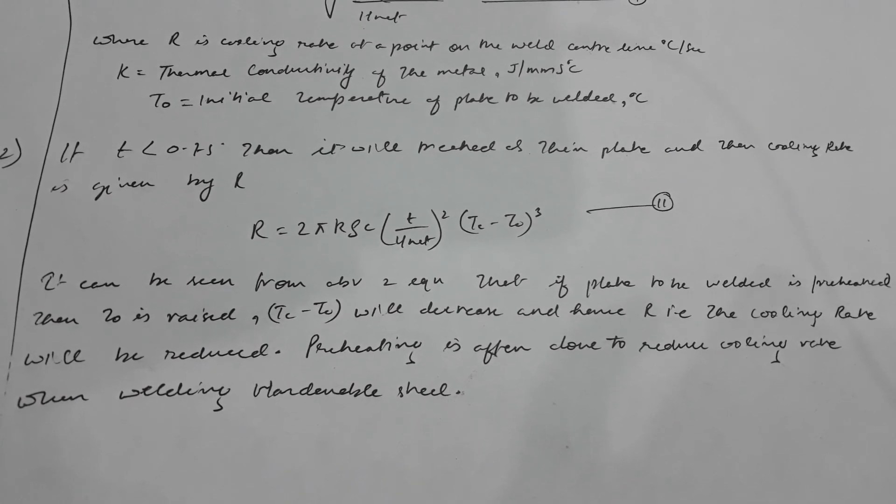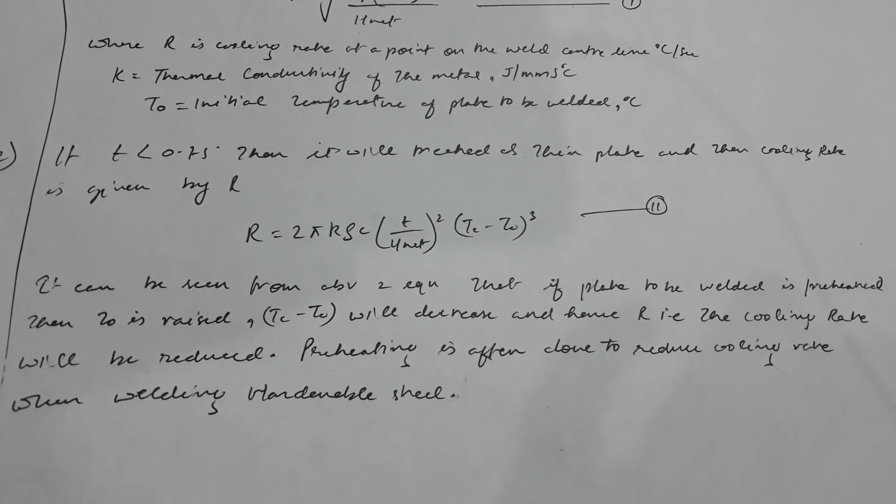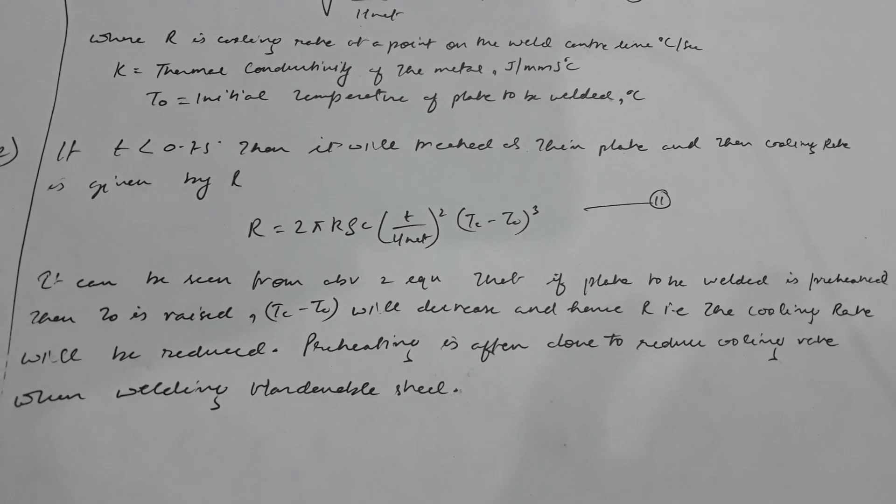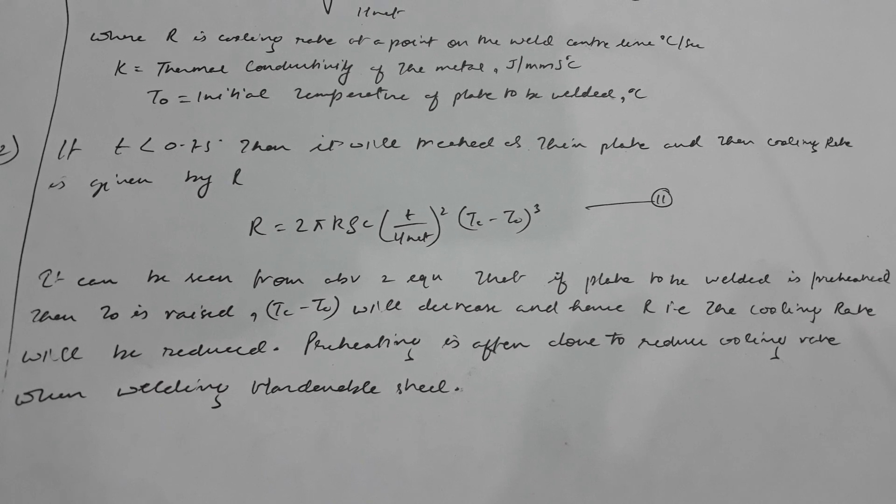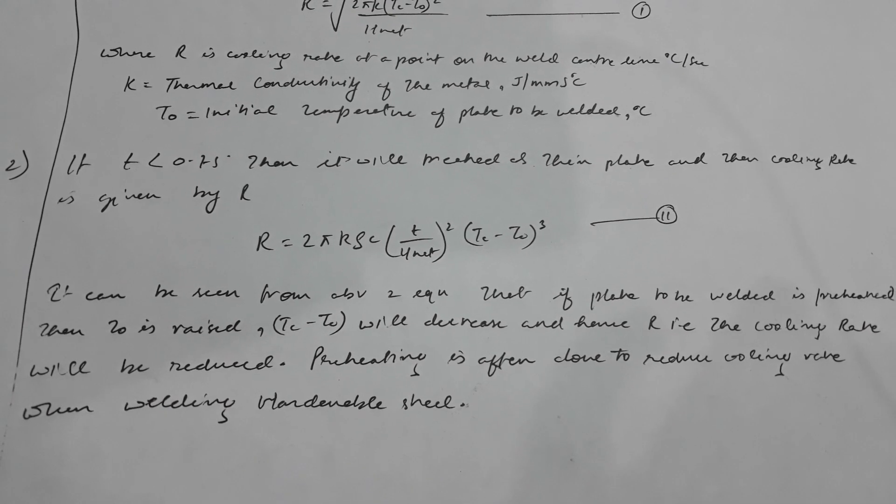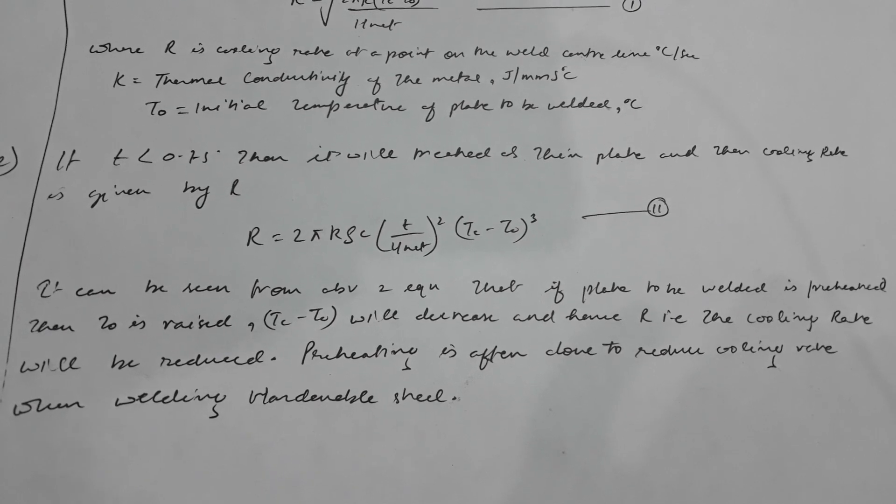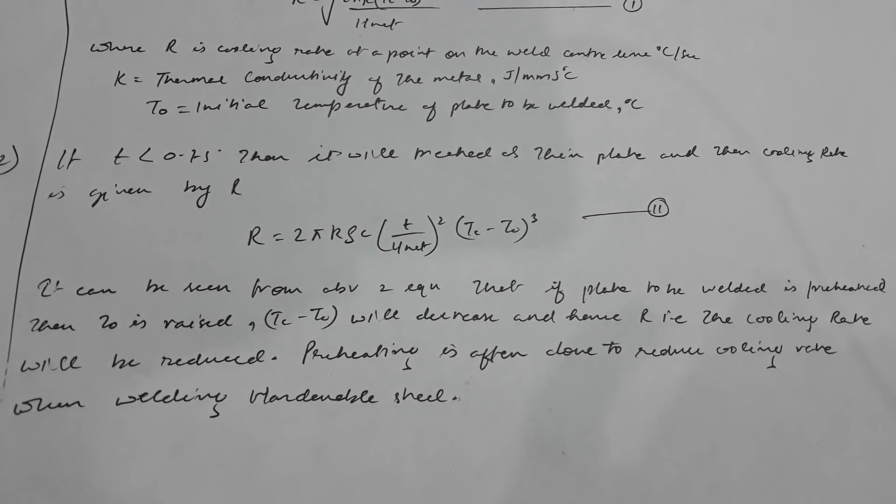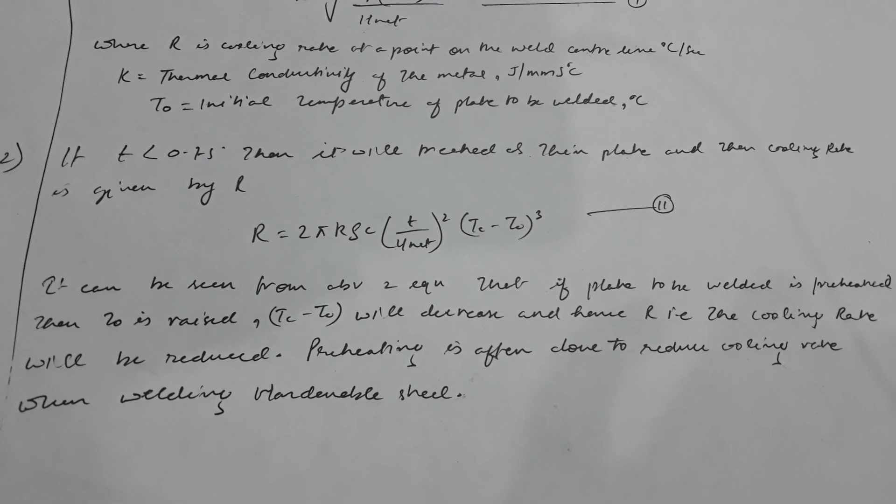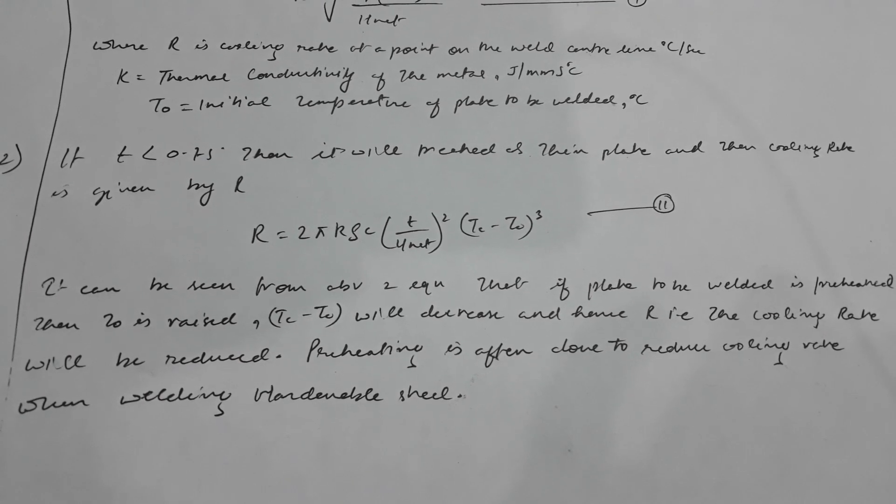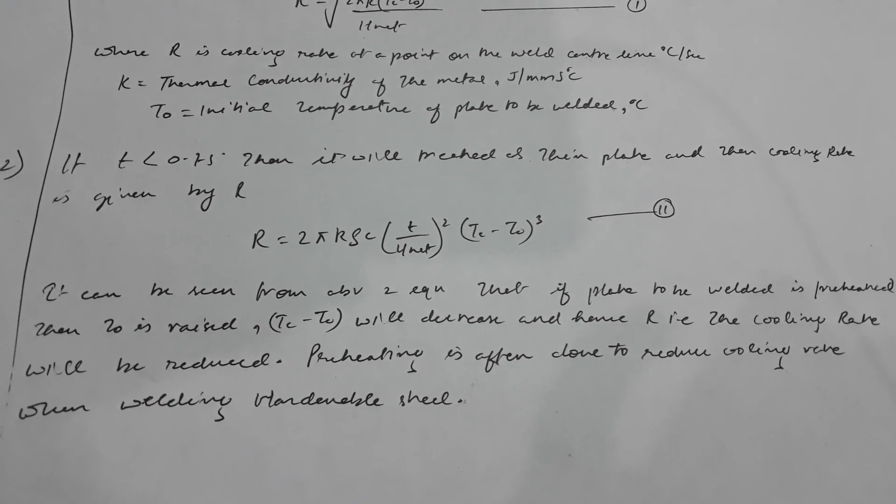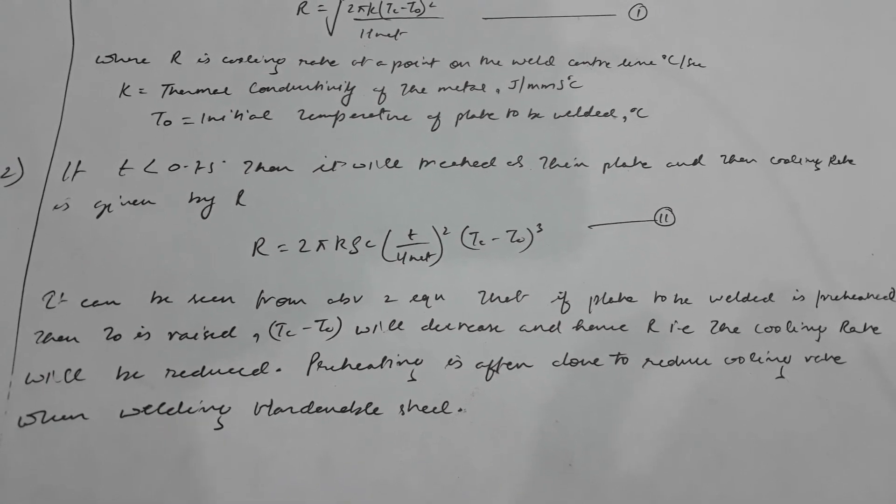If the plate to be welded is preheated to a raised temperature, tc minus t0 will decrease, and hence R, that is the cooling rate, will be reduced. Preheating is often done to reduce cooling rate when welding hardenable steel.